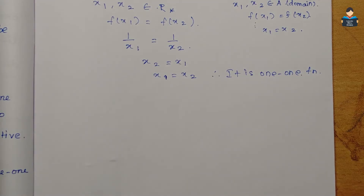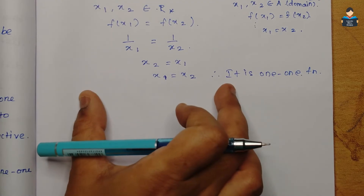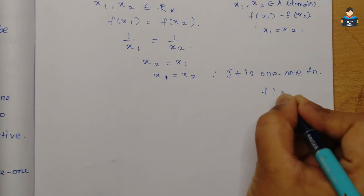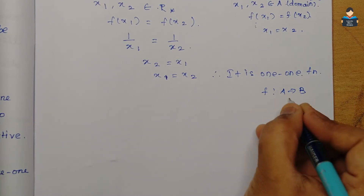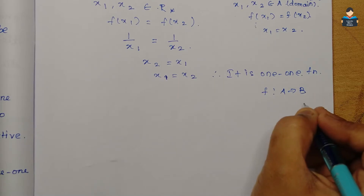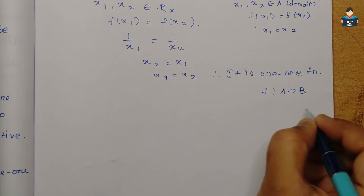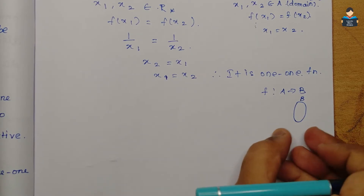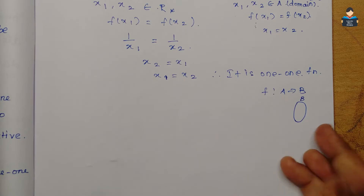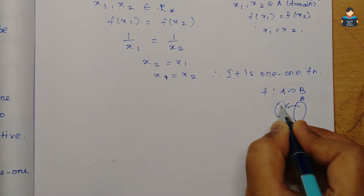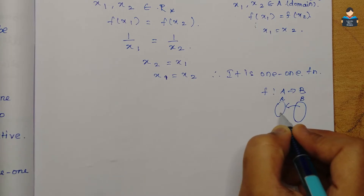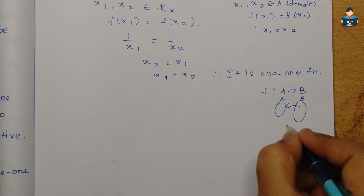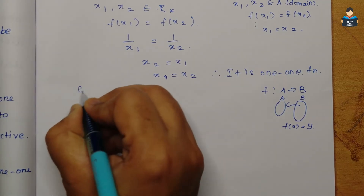Now, next we prove the onto function. We will use the definition of onto function. For a function from A to B, where A is the domain and B is the co-domain, onto means every element of B has a pre-image in A — that is, for every y in B, there exists x in A such that f(x) = y.